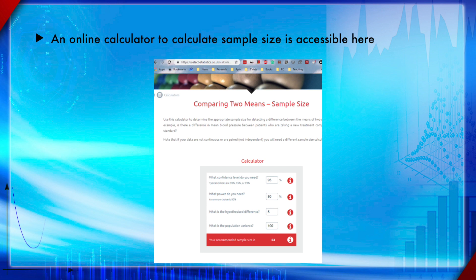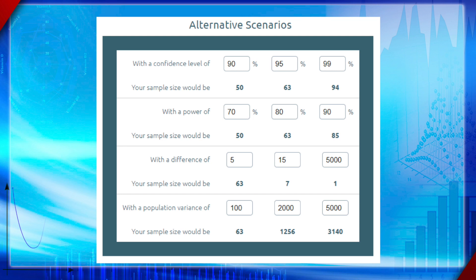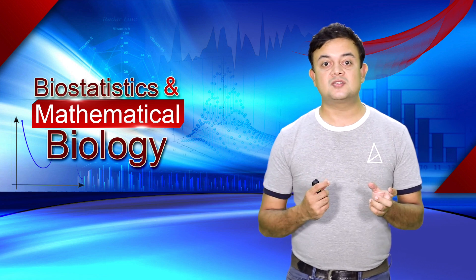There is an online calculator to calculate sample size, accessible at a provided URL. You just insert all parameters including expected effect size and expected standard deviation, and the number will be calculated. If you scroll down, it will also show alternate scenarios — for example, if you are okay with lesser power, the required sample size will be less. Similarly, if your significance level is 0.1 instead of 0.05, the required sample size will also be smaller.